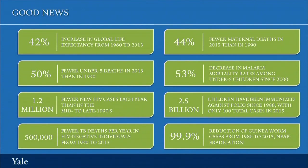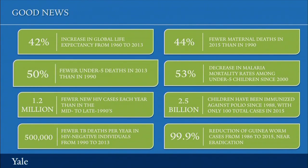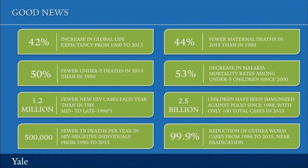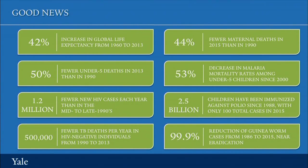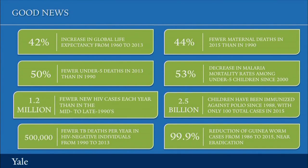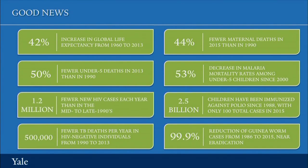Second, there's been a substantial reduction in under-5 deaths. Fifty percent fewer under-5 deaths occurred in 2013 than in 1990. There are 1.2 million fewer new cases of HIV than there were in the mid to late 1990s as well.